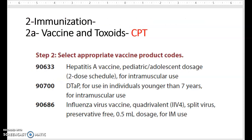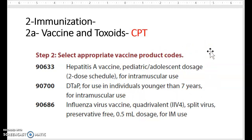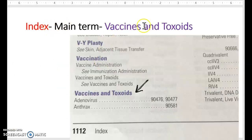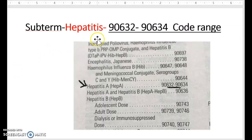Now we find our immunization codes — both vaccine/toxoids and administration codes, found in the CPT manual. For the three vaccine codes, in the index our main term is vaccine and toxoids. We look up the sub-term hepatitis and write down the code range. We find DTAP in the same way — short term and full detail with the code range next to it. We do the same for influenza, all under vaccine and toxoids.